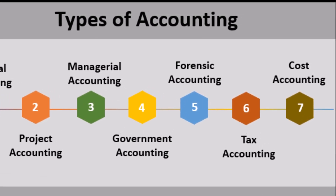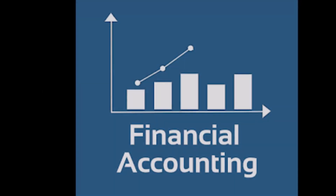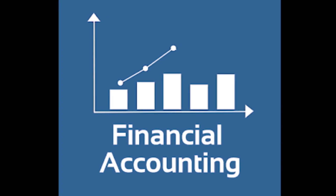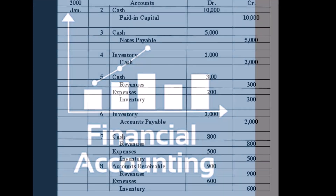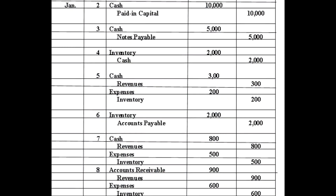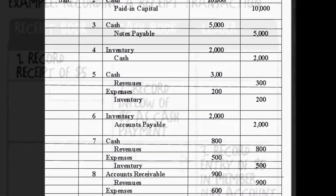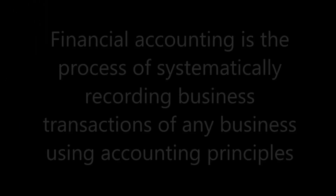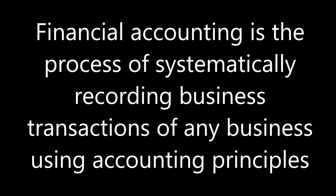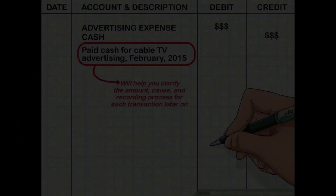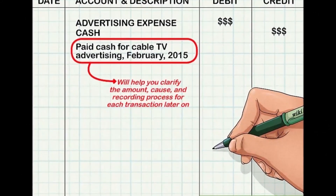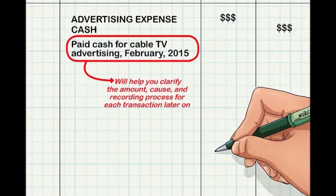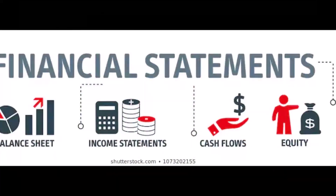We will get started with financial accounting. In the day-to-day operations of any business, transactions are recorded in the books, and then these financial records become the basis for preparing financial statements. This is the process of financial accounting. In other words, financial accounting is based on a systematic method of recording transactions of any business using accounting principles. It entails preparing financial statements, which then become a source of information for external users, or external stakeholders.